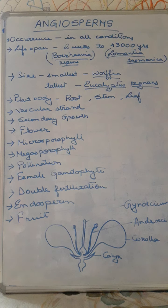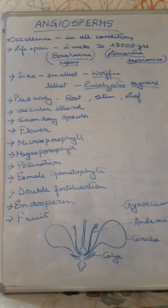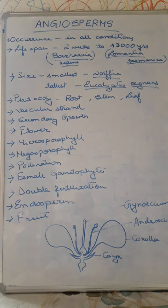The microsporophylls show reduction in sterile tissue, and anthers are developed from them. These anthers possess microsporangia which develop pollen grains bearing microspores. The megasporophylls form the carpels — the gynoecium. The individual part is called the carpel, which consists of stigma, style, and ovary. The megasporophyll consists of the stigma, style, and ovary — the ovary being the vessel containing the ovules.